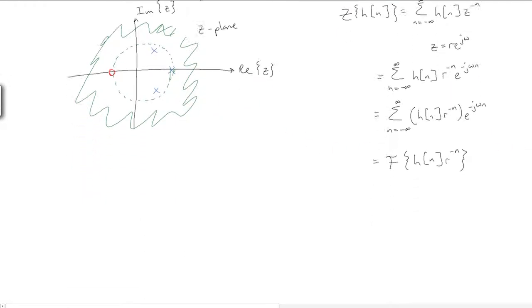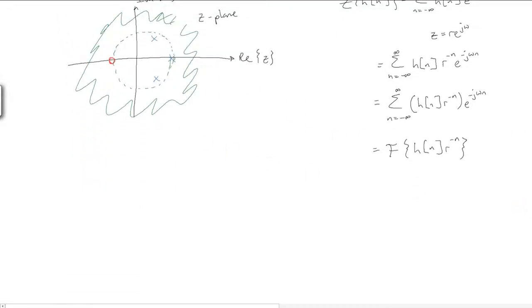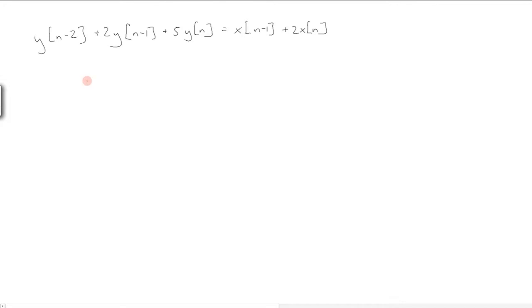Let's look at a concrete example to solidify these concepts. We have the following difference equation. Taking the Z-transform of both sides, we get, and writing the transfer function H of Z as Y of Z over X of Z, we get the following ratio.